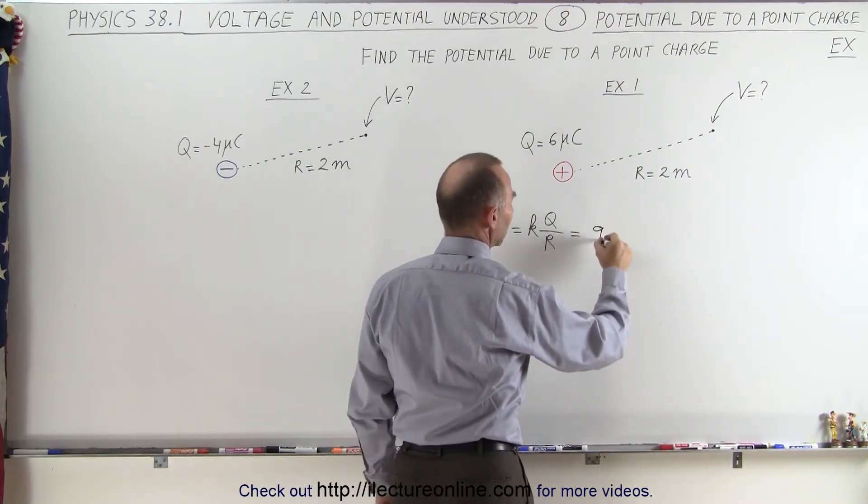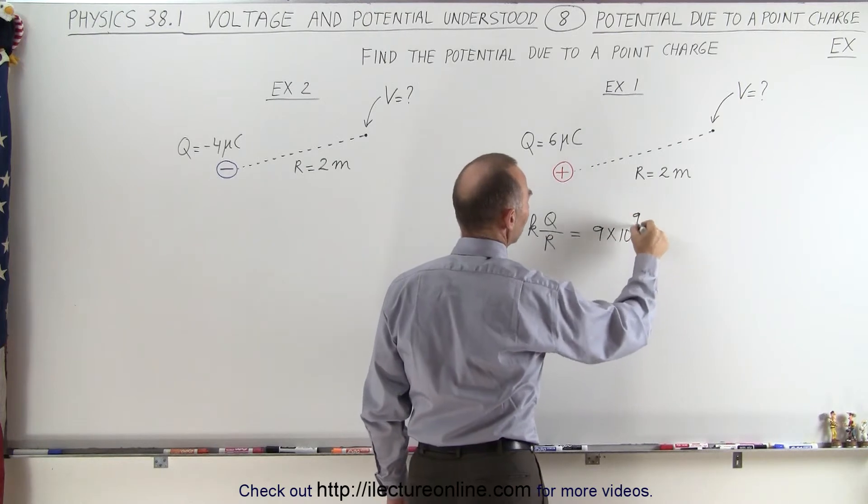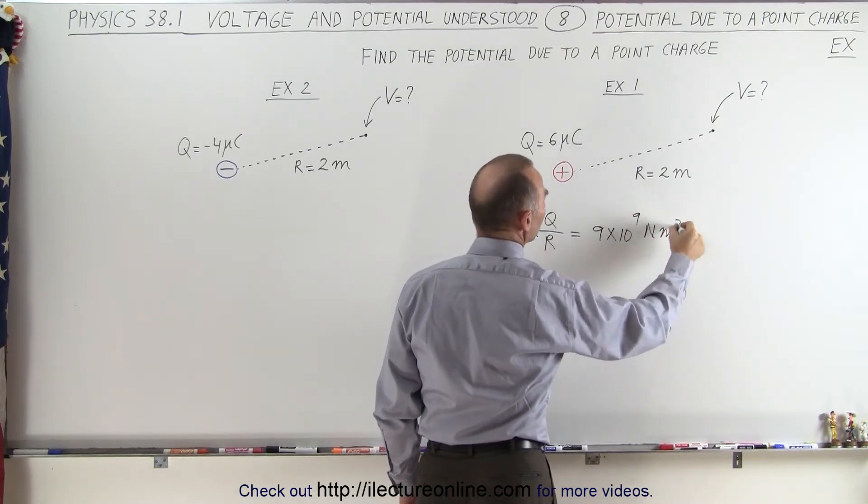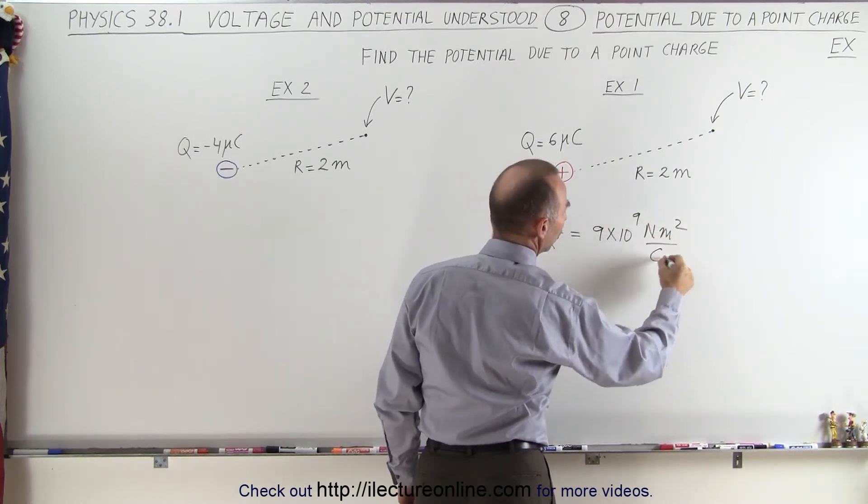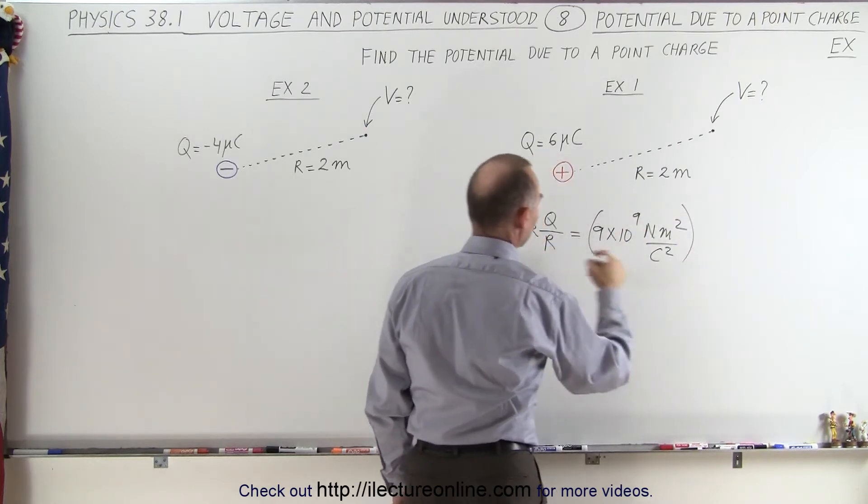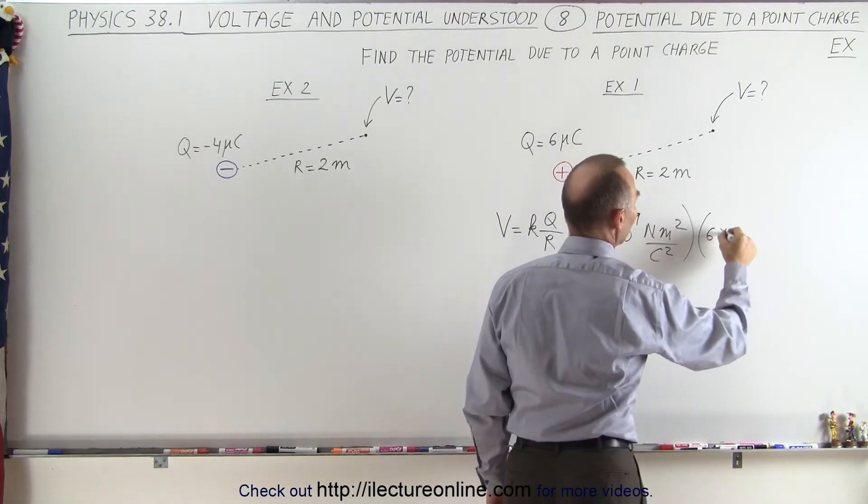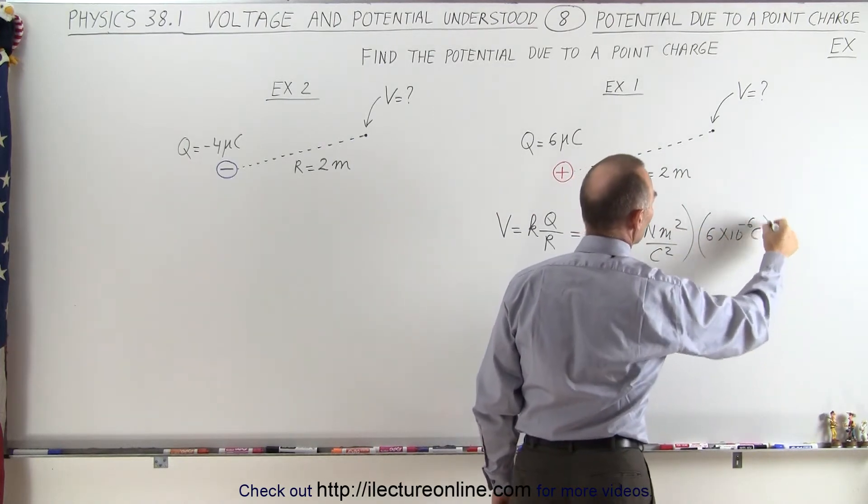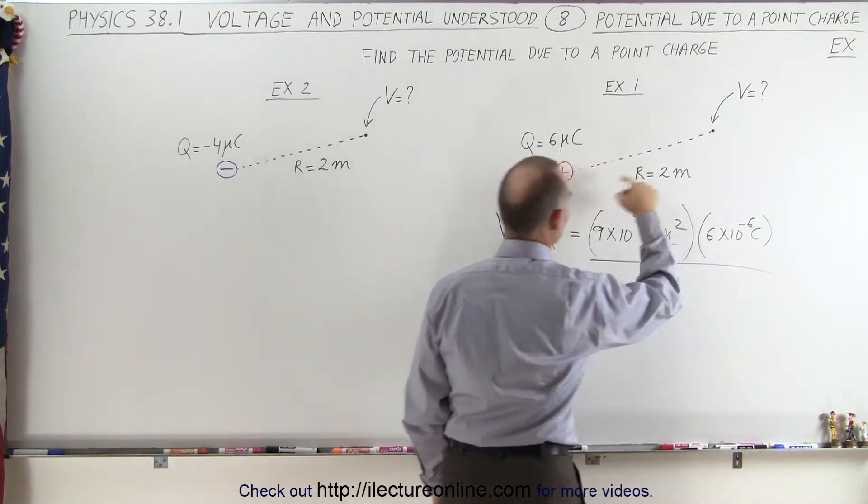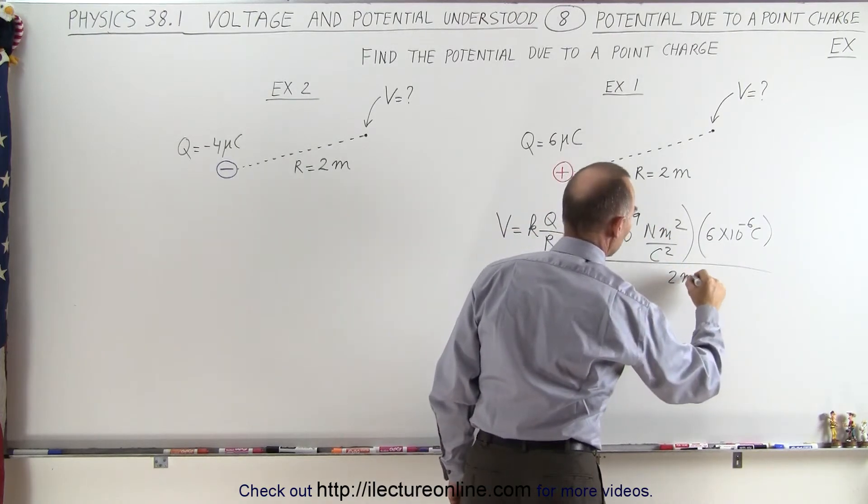So in this case that would be 9 times 10 to the 9th newtons meters squared per coulomb squared, that's for the constant k, times q, that's going to be 6 microcoulombs, that's 10 to the minus 6 coulombs, all divided by the distance, which in this case would be 2 meters.